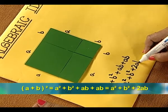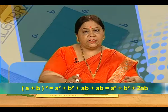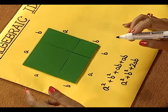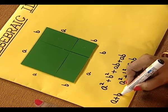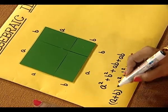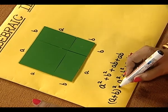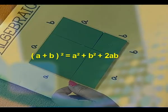This is the total area of the square. We had the square of dimension a plus b. So we have an algebraic identity verified as a plus b whole square is equal to a square plus b square plus 2ab.